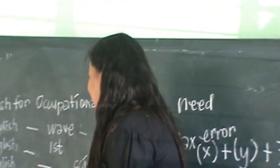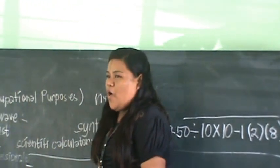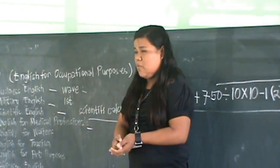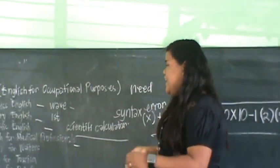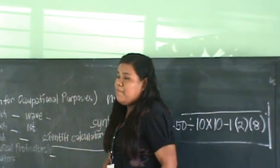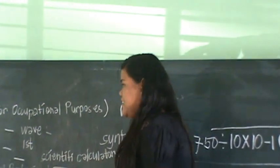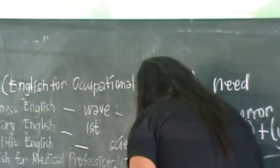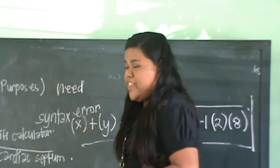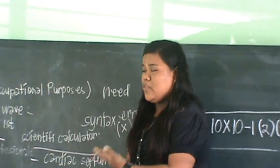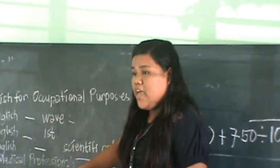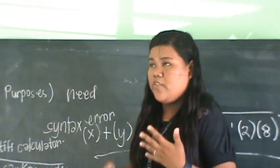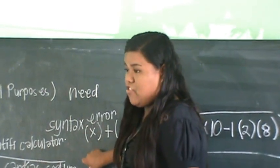English for medical professionals: for example, the phrase 'a wall between the right and left ventricles' is a long description. For medical professionals, they would just say a short two-word term. For us, we don't know what medical professionals' language or terms they are using, so we use longer words for better understanding, while they have their own specific term.